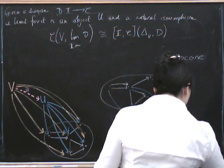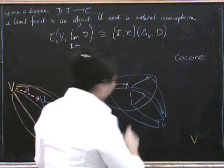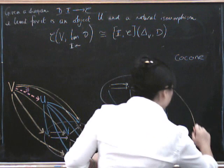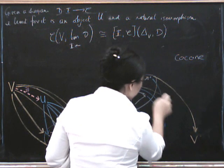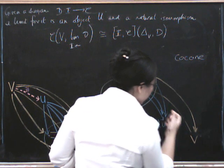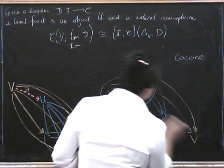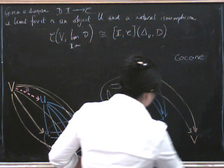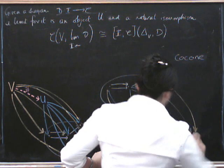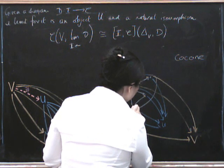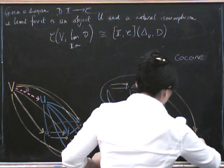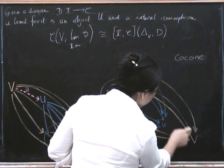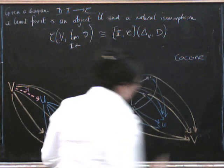So let's put a vertex down here, and again, for every object in the diagram, we've got to have a morphism to our vertex. Here's a vertex. And here is another vertex. So that's another cone.